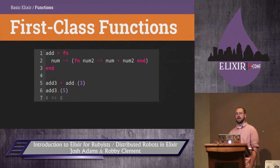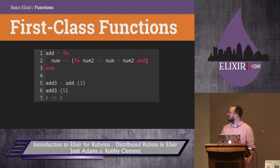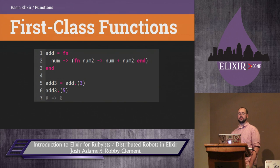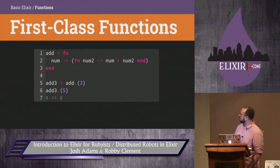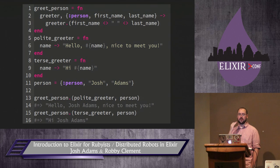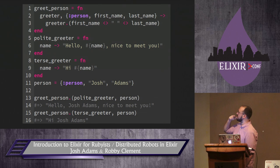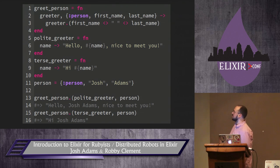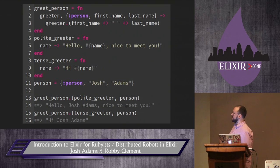Since functions are first class in Elixir, you can pass them as arguments or return them from other functions. Here, 'add' is a function that takes an argument and returns a function that will add that argument to the new function's single argument. You can also write functions that take other functions as arguments. Here's greet_person, which takes a greeter and a person tuple, and then just calls the greeter on the person tuple — showing you can pass in functions as arguments to other functions.